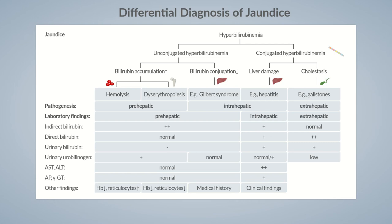The diagnosis of cholestasis is usually based on cholestatic enzymes and imaging. Hepatocytes aren't directly affected in extrahepatic jaundice; therefore, transaminase levels are normal or only moderately elevated, usually under 200 units per liter. Alkaline phosphatase and gamma-glutamyl transferase, also termed cholestatic enzymes, are often more than three times the upper reference value.